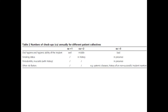If oral hygiene and hygienic ability are good, one checkup per year is sufficient. If oral hygiene is moderate, two visits per year; if poor, three visits per year. For smoking status: past history requires two visits, current smoking requires three, non-smokers need annual visits. History of periodontitis or mucositis as past history warrants one visit per year; active periodontitis requires three. Other risk factors like systemic disease or previous implant failure also require three visits per year.